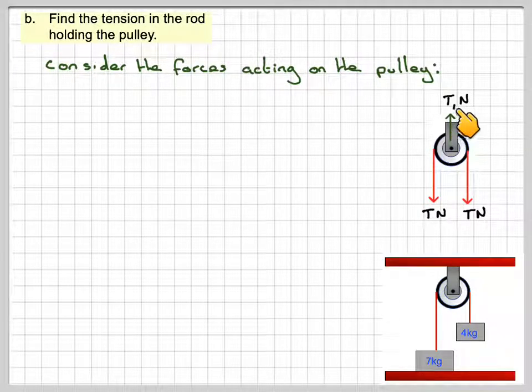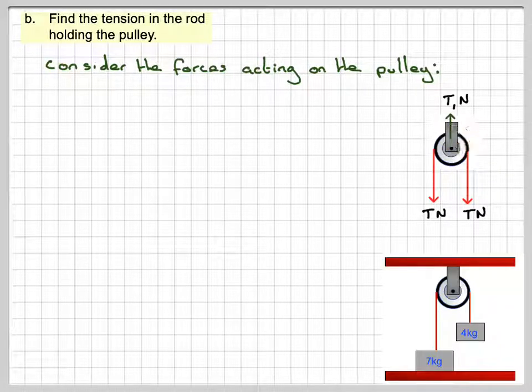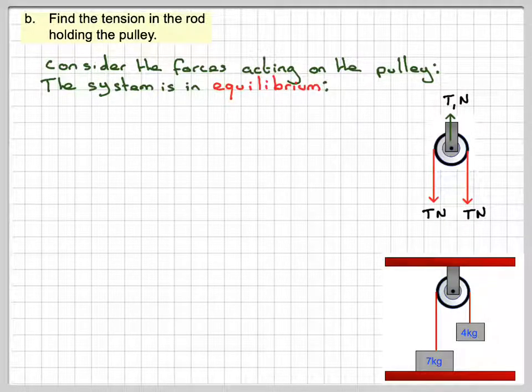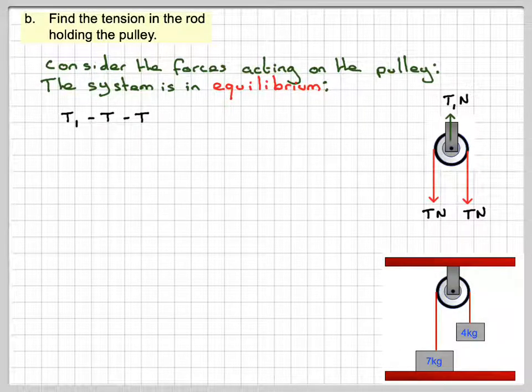and then T1 newtons acting upwards here. And this is the force that we need to find. Now, as the system is in equilibrium, T1 minus T minus T is equal to 0.